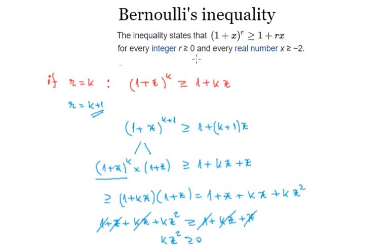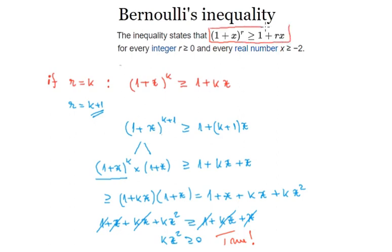We know that k is an integer greater than or equal to 0, and x squared is always greater than or equal to 0, so kx squared is indeed greater than or equal to 0. So our statement turns out to be true. Since we proved it for r equals k plus 1 assuming it holds for k, by the principle of mathematical induction, 1 plus x to the power of r is greater than or equal to 1 plus rx for all the chosen values. And that is Bernoulli's inequality.